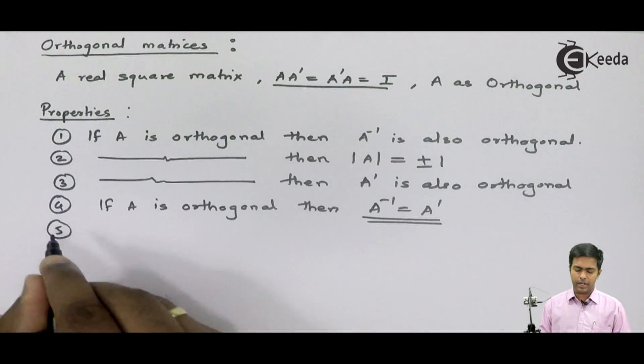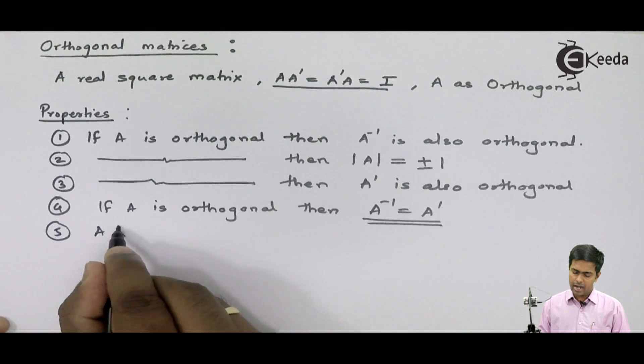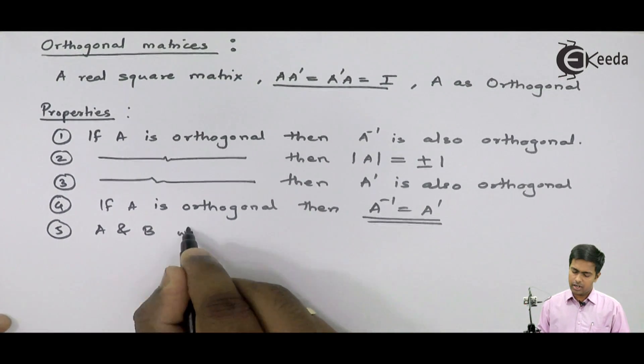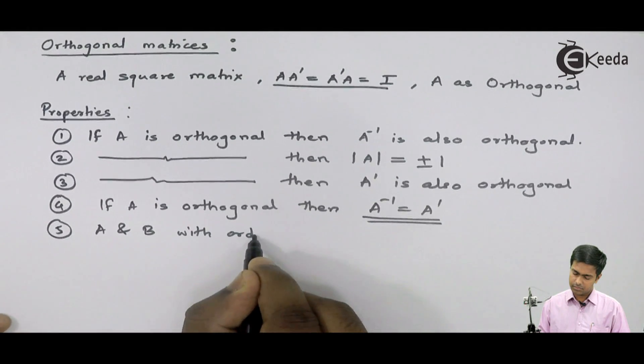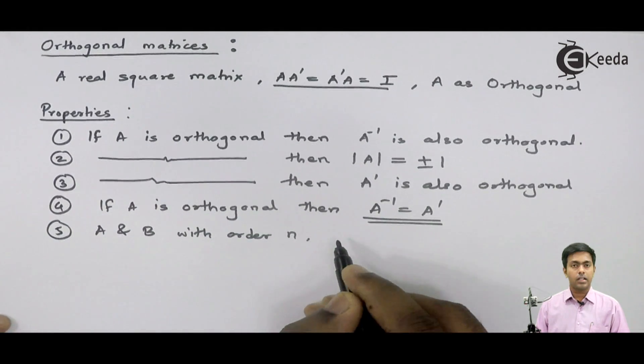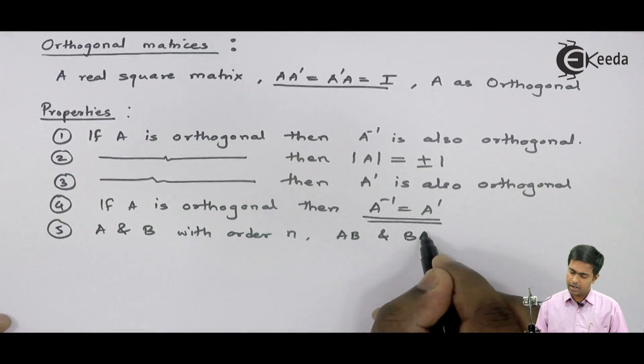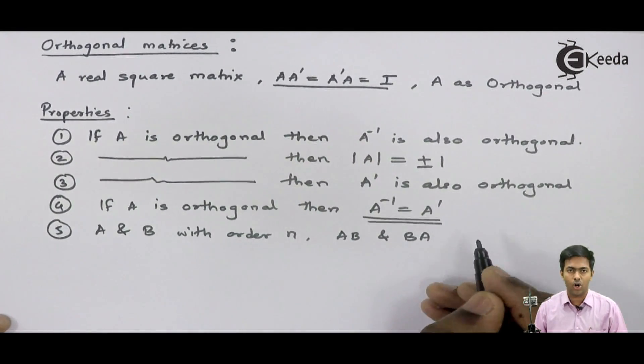And the last property is if A and B are both orthogonal with order N, then AB and BA are both orthogonal.